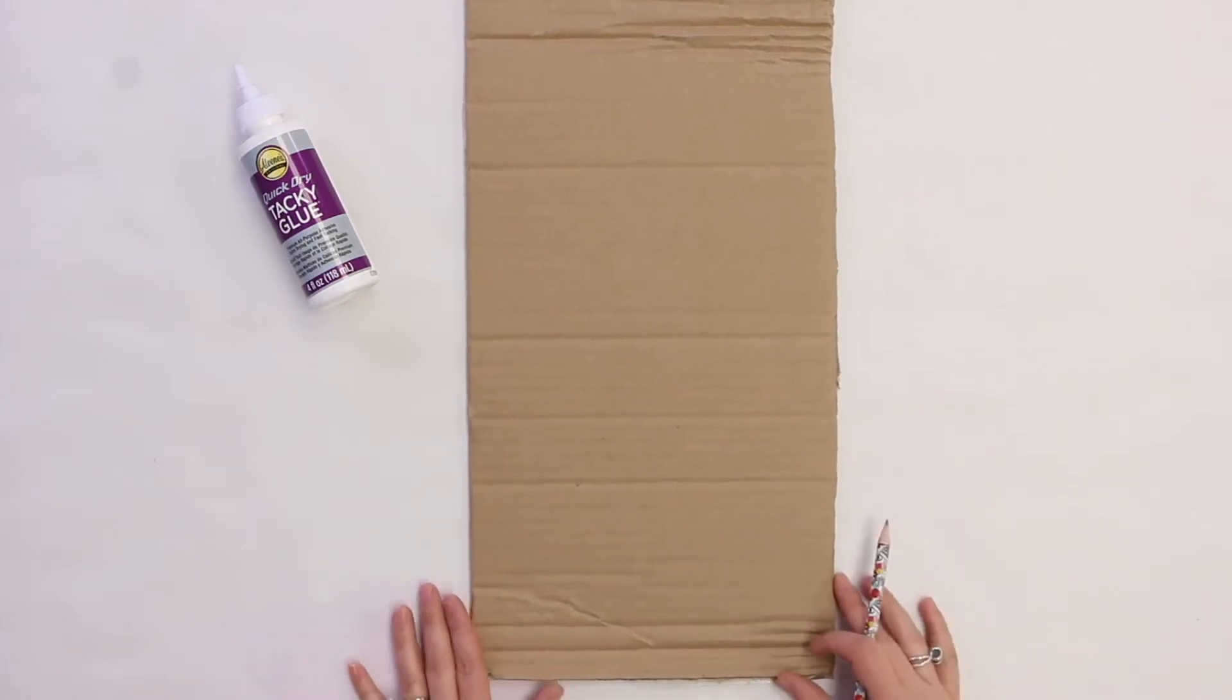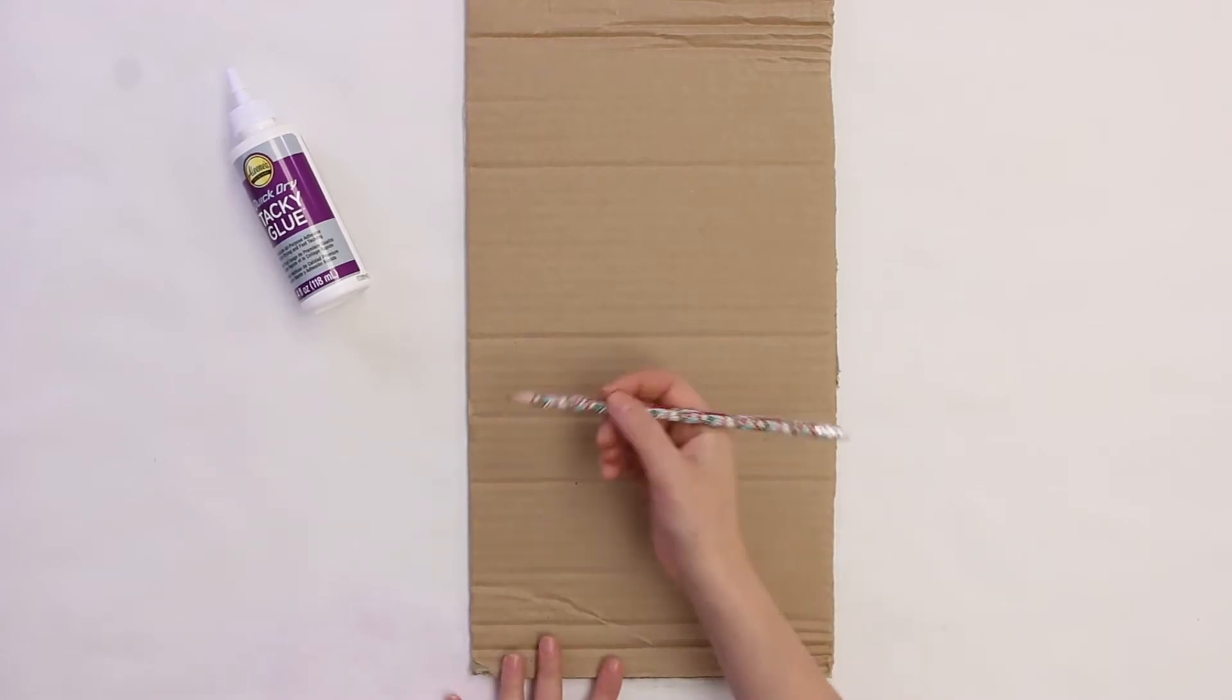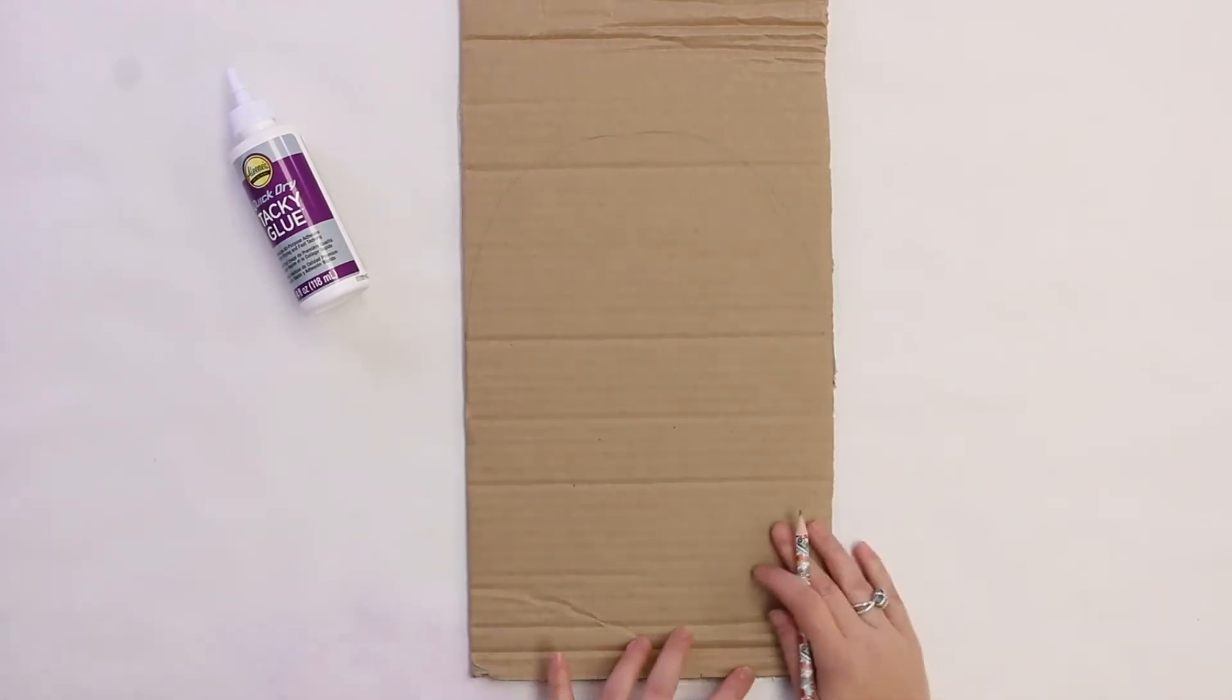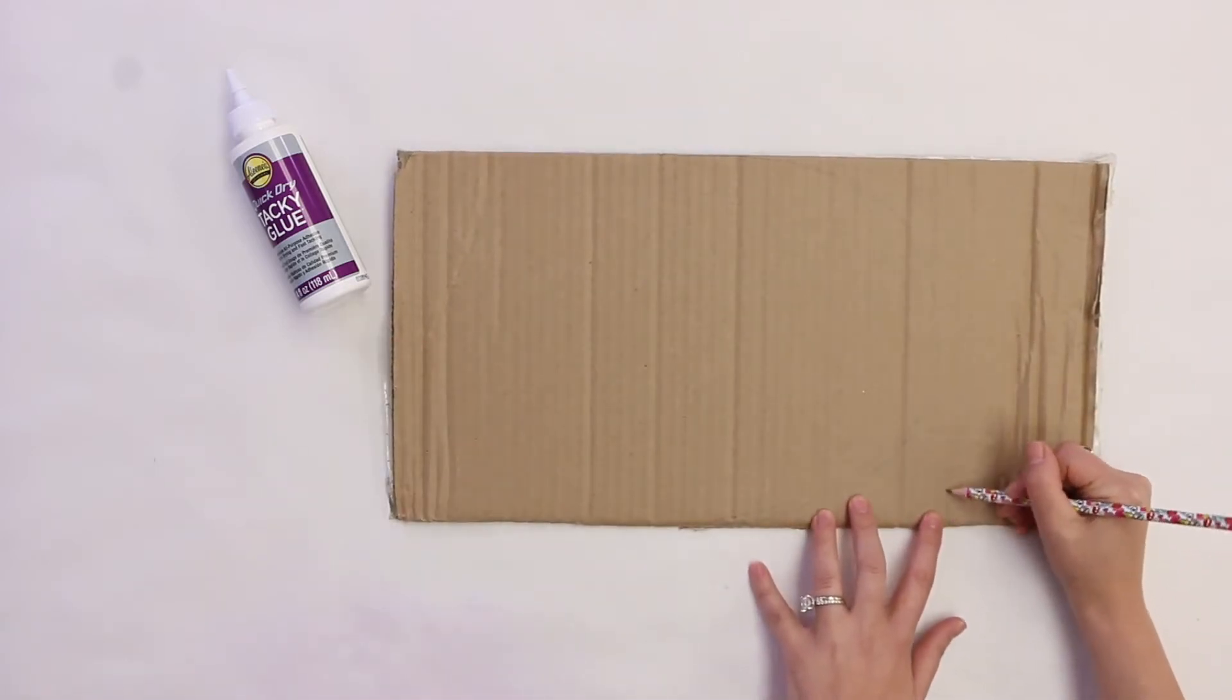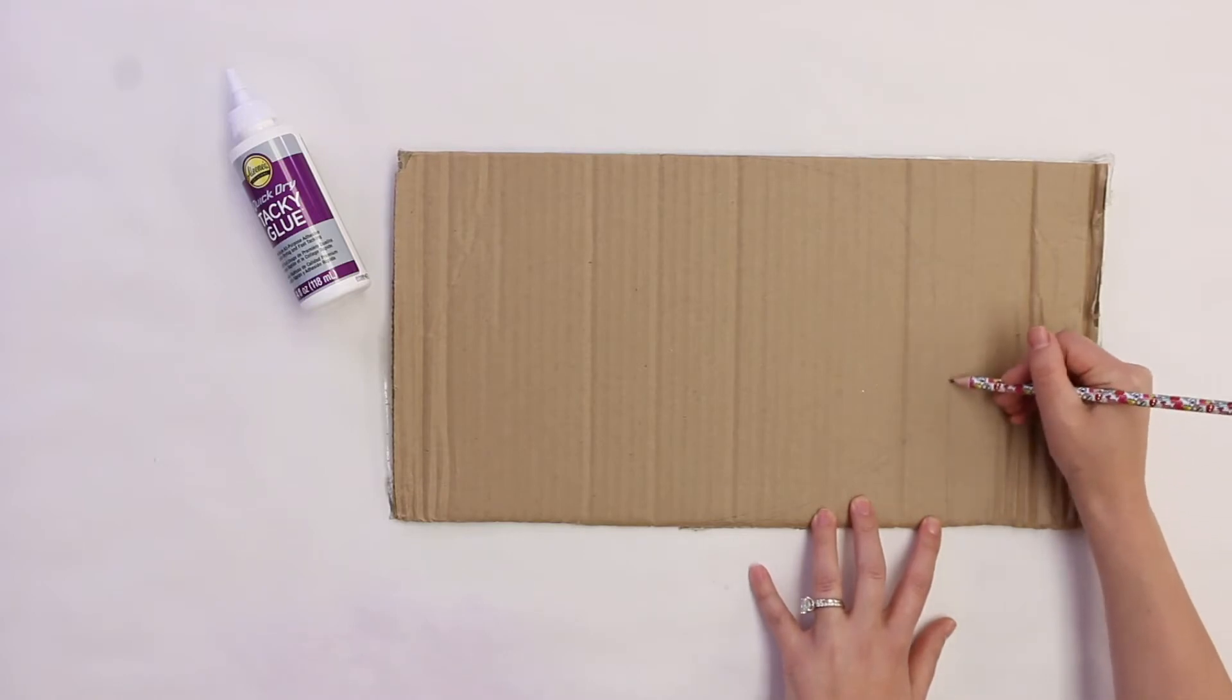What we're going to do first is starting at the bottom, we're going to make a curved shape. And then before we cut it out, we're going to do a rounded popsicle stick right on top there.